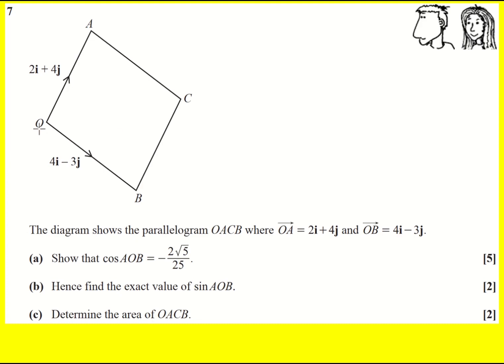We have a parallelogram and OA and OB are defined as vectors, so we don't know the side lengths at the moment. We're asked to show that cos AOB, that's this angle here, is equal to minus 2 root 5 over 25.